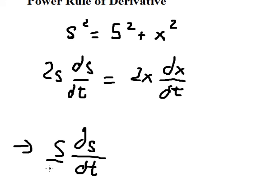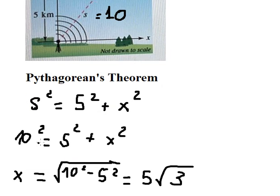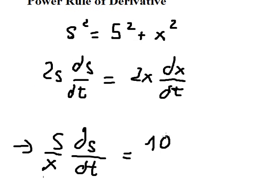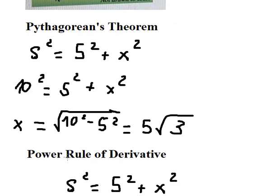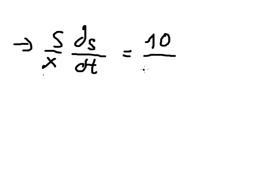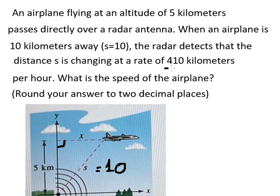We divide by 2x, so s we have number 10, x we have this one, ds over dt that is about this one.